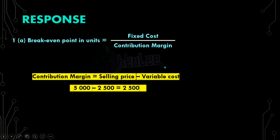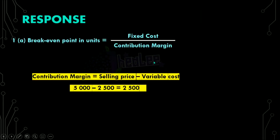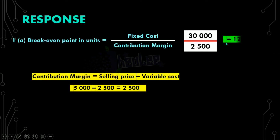With that said, we are now able to calculate our break-even point in units. We need to recall the value for fixed cost. From the question, the fixed cost for the period is $30,000. So our calculation is $30,000 divided by the contribution margin of $2,500, and that gives us a result of 12 units. So our break-even point in units is 12 units.